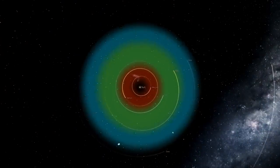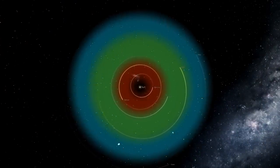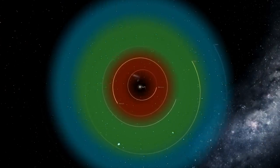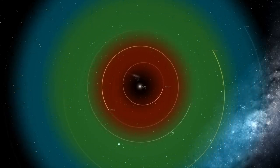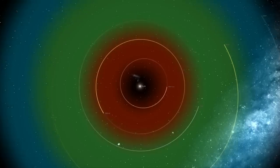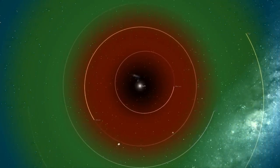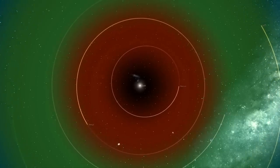For our solar system, the inner edge is around 142 million kilometers from the sun. The outer edge is around 240 million kilometers. That puts Earth barely within the inner edge of the habitable zone and Mars beyond the outer fringe.